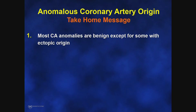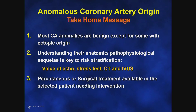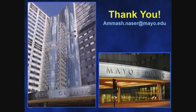Take-home messages: First, most coronary artery anomalies are benign, except for those with ectopic origin as discussed. Second, understanding the relationship between anatomy and physiology is critical for risk stratification — this is the added value of stress testing, echocardiography, CT scan, and intravascular ultrasound. Third, percutaneous or surgical treatment is available for selected patients needing intervention. Thank you for your attention. If you have any questions regarding this subject, my email address is provided.